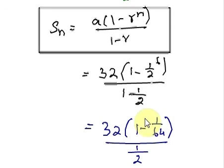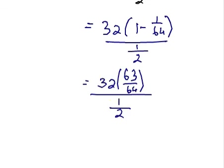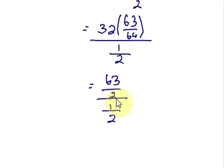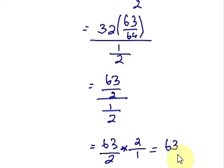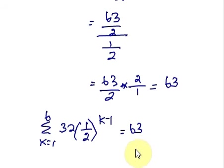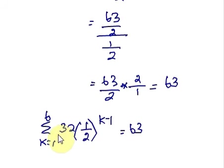Now perform the fractional subtraction, then multiply. We have a fraction in both numerator and denominator, so perform fractional division: keep the first fraction as is, put a multiplication symbol in between, and flip the second fraction. Our final solution is: the summation of k from 1 to 6 of 32 times (1/2) raised to k minus 1 equals 63.